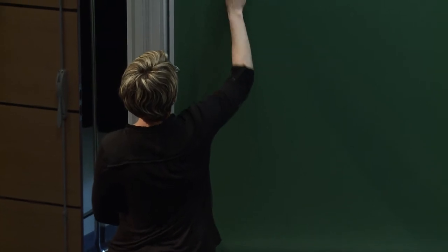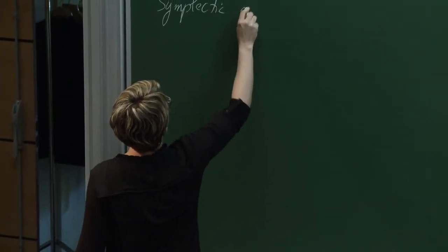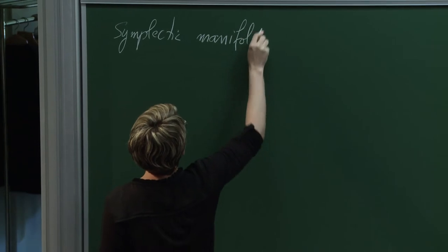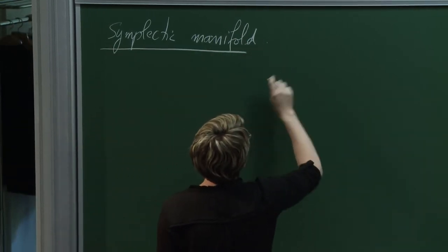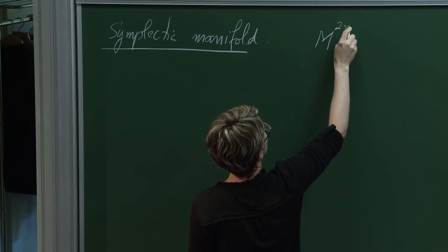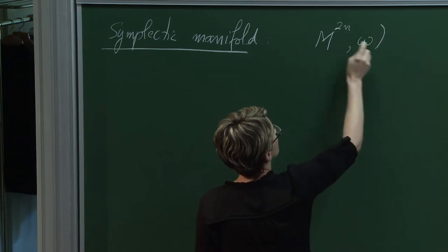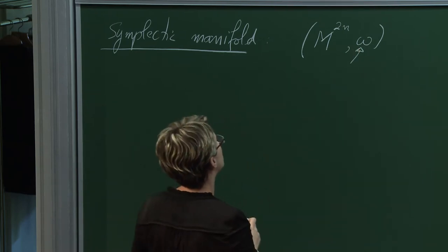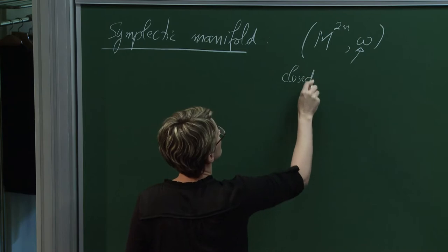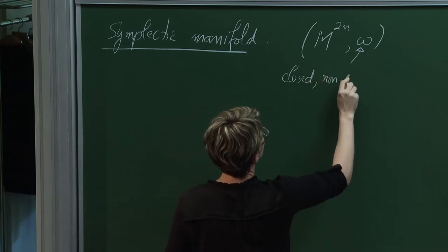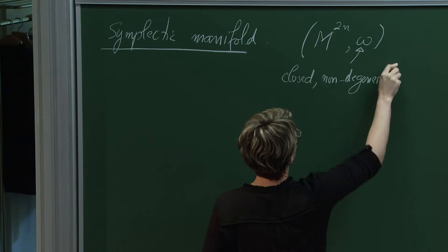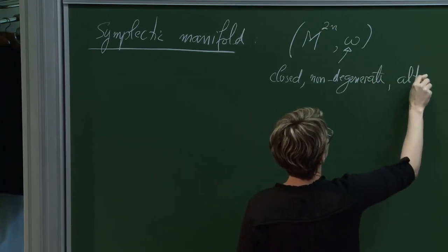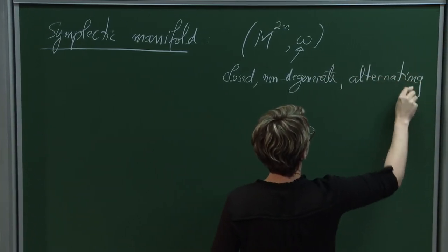Starting slowly: what is a symplectic manifold? A symplectic manifold is a manifold that is even-dimensional, endowed with a symplectic form. What does this form need in order to qualify as a symplectic form? It needs to be closed, non-degenerate, and an alternating 2-form.